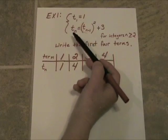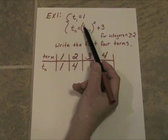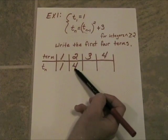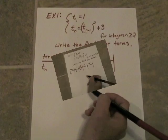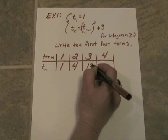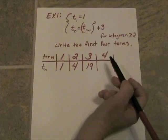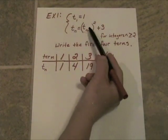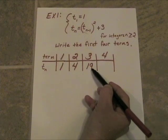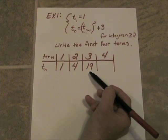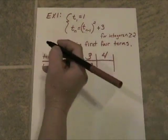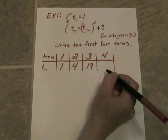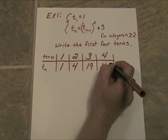Let's move to the third term, t sub 3. We will need t sub 3 minus 1 which is 2. So the second term's value was 4. We will square the 4. We will get 16 plus 3 is 19. Now the fourth term. To get the fourth term we have to use the value of the third term which was 19. So we take 19 and we square it and that gives us 361 and then 361 plus 3 is 364.